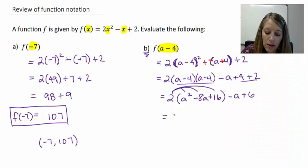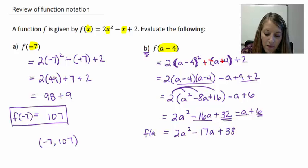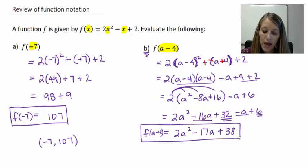Distribute my 2 through. That gives me 2a squared minus 16a plus 32. Just copying down my last two terms. Minus a plus 6. So now I just have to combine my terms. 2a squared and negative 16a minus a gives me a negative 17a. And a 32 plus 6 gives me a 38. So f of a minus 4 simplifies to be this trinomial there. 2a squared minus 17a plus 38.